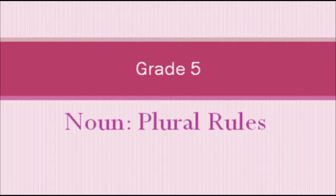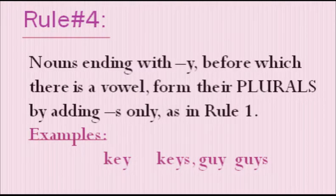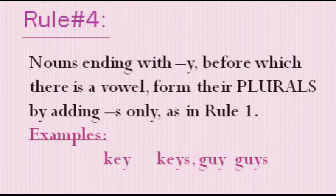Let's start with Rule Number Four. Rule number four is: nouns ending with Y — where there is a vowel before the Y — form their plurals by adding S only, same as Rule One. So essay nouns, those having a vowel before the Y, we are going to add S only.